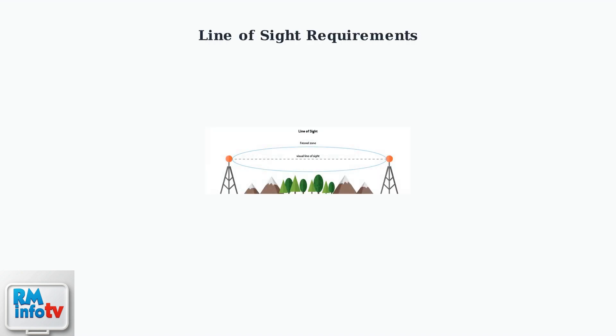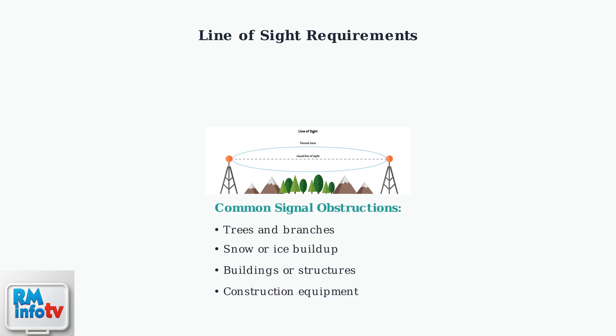Loose connections are a common cause of intermittent signal issues. A clear line of sight between your satellite dish and the satellite is essential for proper signal reception. Any obstructions in this path can cause signal disruption or complete loss. Common obstructions include trees, buildings, snow accumulation on the dish, and even temporary obstacles like construction equipment. The Fresnel zone around the signal path must also remain clear for optimal reception.